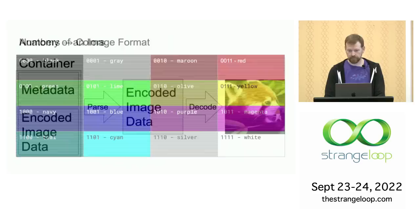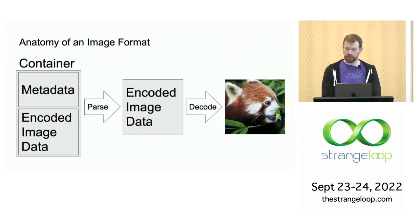The image data stored in the file is called the encoded or compressed image, and the rest of the file with the metadata is called the container. Interpreting the structure of the container is handled by the parser, and decompressing the image data is handled by the codec. In the case of AVIF, the container is MP4 and the codec is AV1. More about MP4 in a minute.